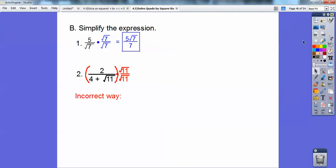When you do that, watch what happens. I get 2 root 11 on top, and then I distribute the root 11 through. I get 4 root 11 over 11. I still have a radical in the bottom. I just moved it. So that's not going to do anything.